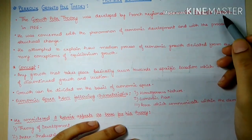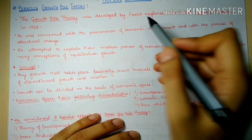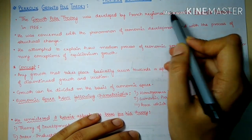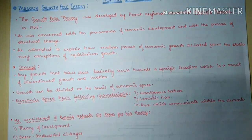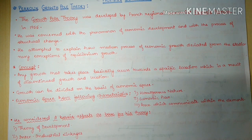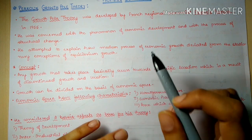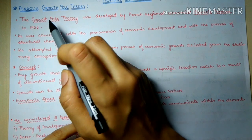François Perroux gave this growth pole theory in 1955 and he was a French regional economist. He was basically concerned with the phenomena of economic development and the processes involved in structural changes.